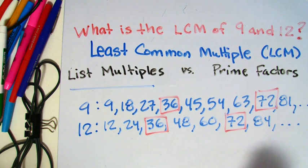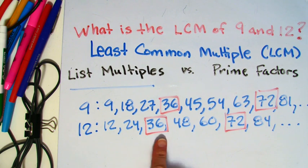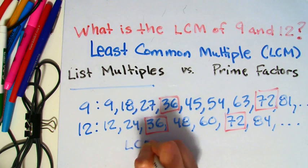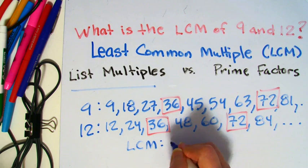And we would continue to find common multiples between the two as we continue to go up in our list. But again, we want to find the lowest or the least common. And so in this case, 36 is going to be the LCM.